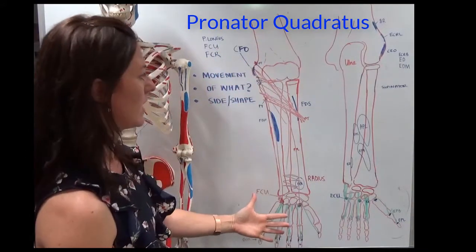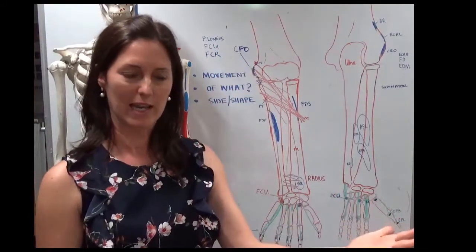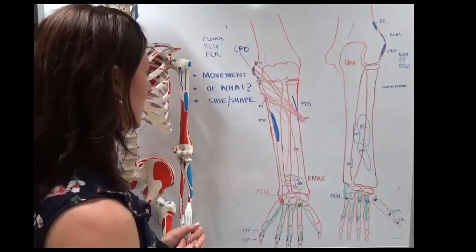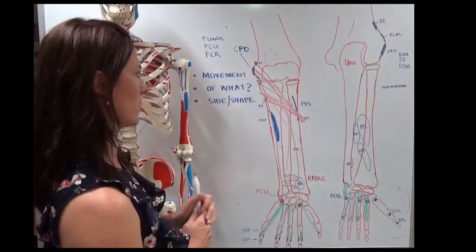So the other thing you should understand is the forearm is divided into three layers, the superficial layer, intermediate layer, and the deep layer. But you can go and study those yourself, what's in each of those layers.